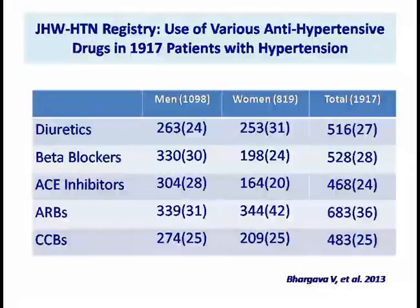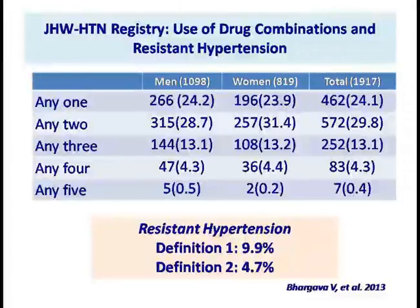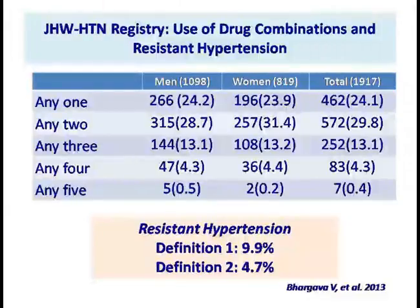In India, we don't really have data on resistant hypertension. What we did was a registry of hypertensive patients — about 2,000 patients who were on multiple drugs — and according to the definition of resistant hypertension, if there were three drugs, one of them being a diuretic, the prevalence was about 10%; and if we use the second definition of four or more drugs, the prevalence is about 5%. Clearly, resistant hypertension is as common in India as in the US.